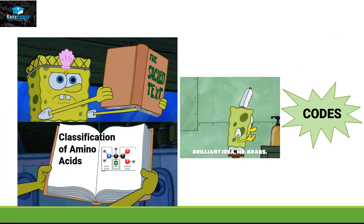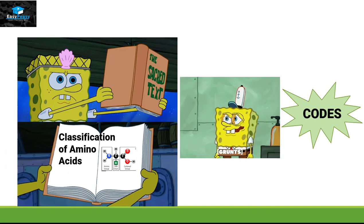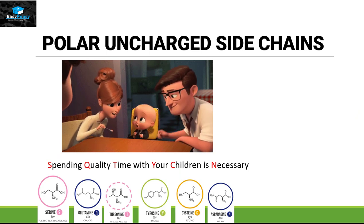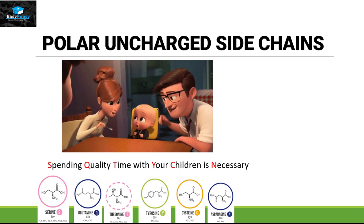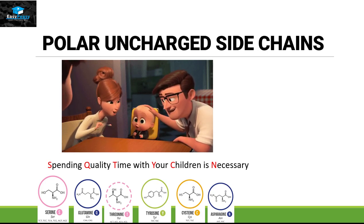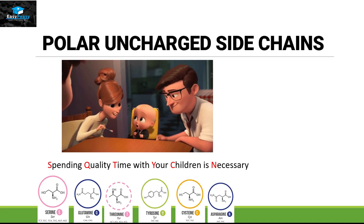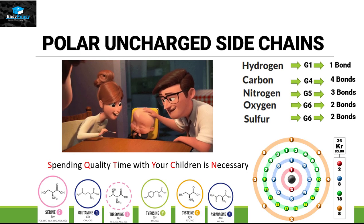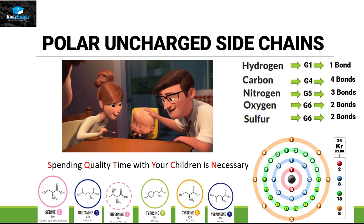Just like hydrophobic amino acids, we also created codes for hydrophilic amino acids. The code for polar uncharged side chain is: 'Spending quality time with your children is necessary.' Again, all the letters that are in red color are basically showing the amino acid present in this category. If we look at the structure of each amino acid, we can see that all the elements making these amino acids are the same as hydrophobic amino acids — that includes hydrogen, carbon, nitrogen, and oxygen.